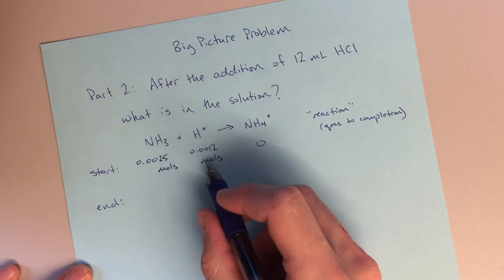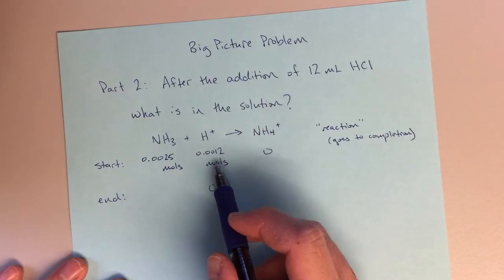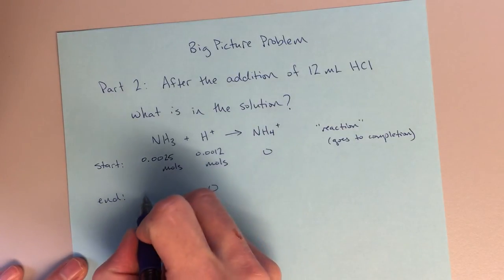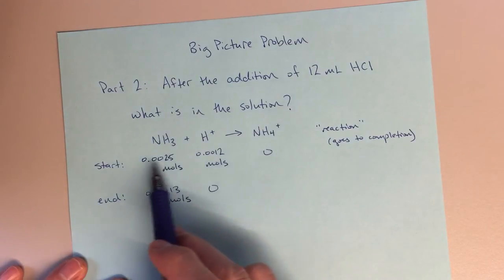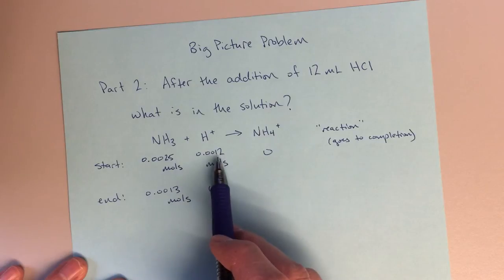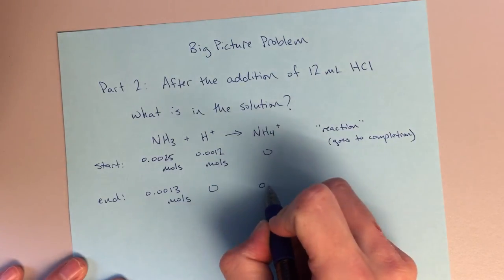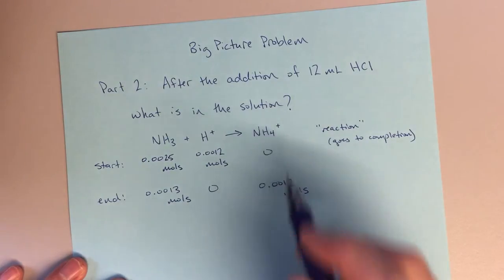I can tell right away that this H+ is the limiting reactant. It's less than 0.0025. So at the end of this, I'm going to end up with 0.0013 moles of NH3, simply subtracting this 0.0012 from 0.0025. And then I will end up with 0.0012 moles of NH4+.